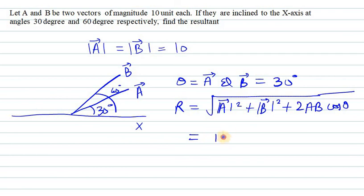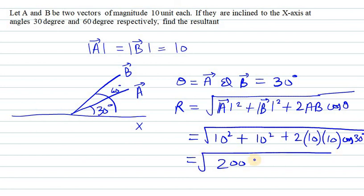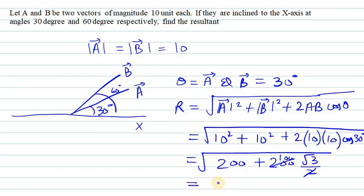A squared is 10 squared, B squared is 10 squared, and twice of 10 into 10 then cos theta, where 30 degrees is the angle between A and B, so we write cos 30 degrees. Then 10 squared is 100, giving us 200 under root. We can simplify: 2 cancels with 200, so we get 100 root 3.